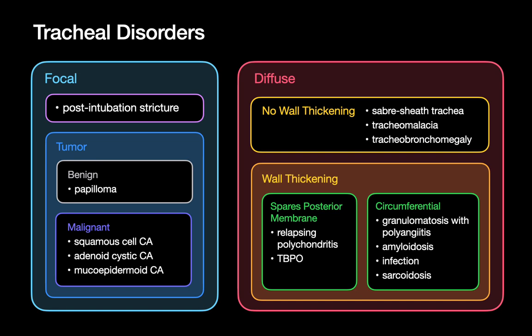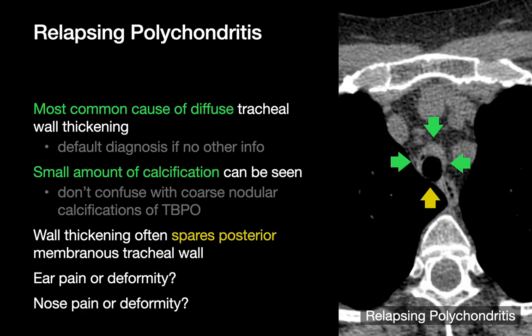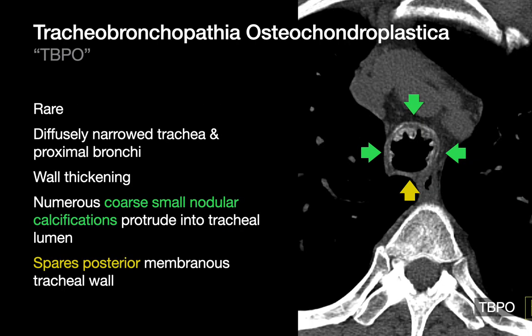Relapsing polychondritis is the most common cause of diffuse tracheal wall thickening. Some element of calcification can occur within the thickened areas. The hallmark is wall thickening of the entire trachea that spares the posterior wall, which remains normal in thickness and very thin. Relapsing polychondritis often manifests elsewhere as well, so these patients may have concurrent ear or nose involvement in addition to the tracheal disorder.